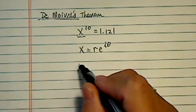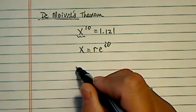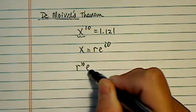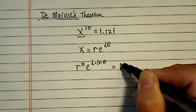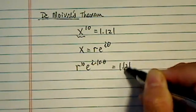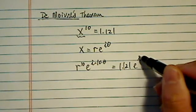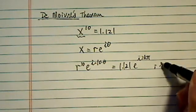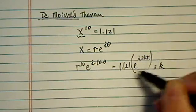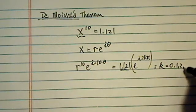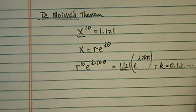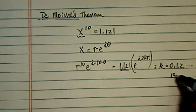And then using the theorem, left-hand side becomes r to the 10th, e to the i times 10 times theta is equal to 1.121, e to the i, 2k pi. Now this side is 2k pi because this one is just a real number. And k is equal to 0, 1, 2, all the way to 9 because we are looking for 10 roots.